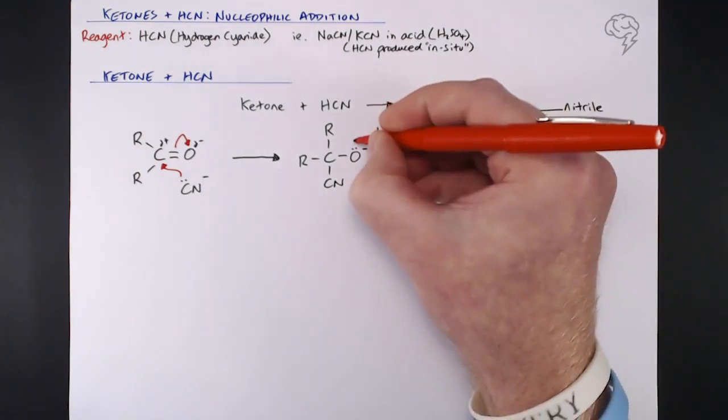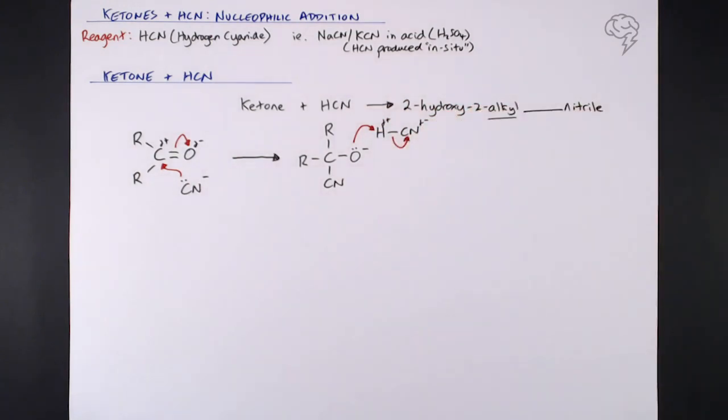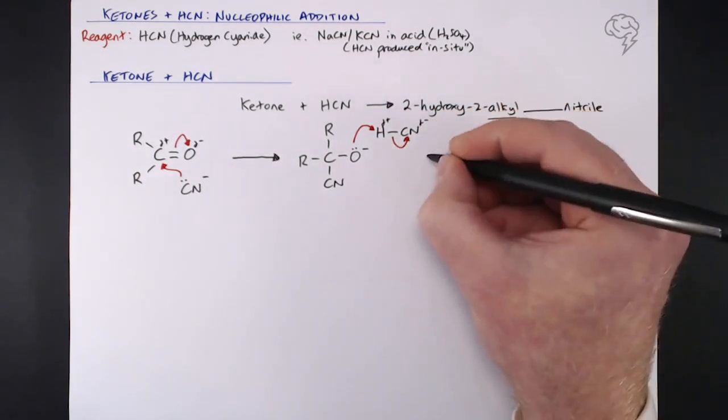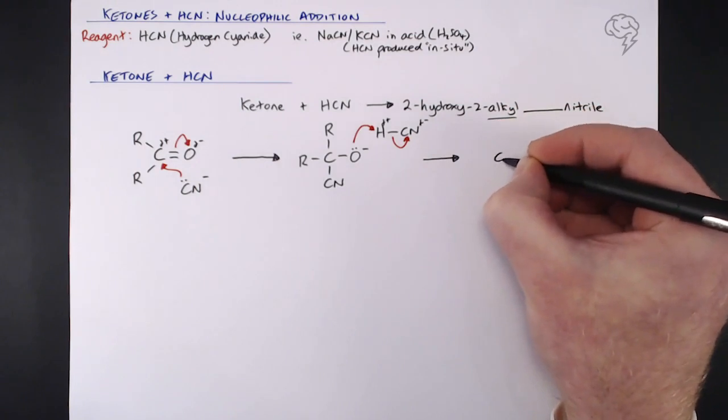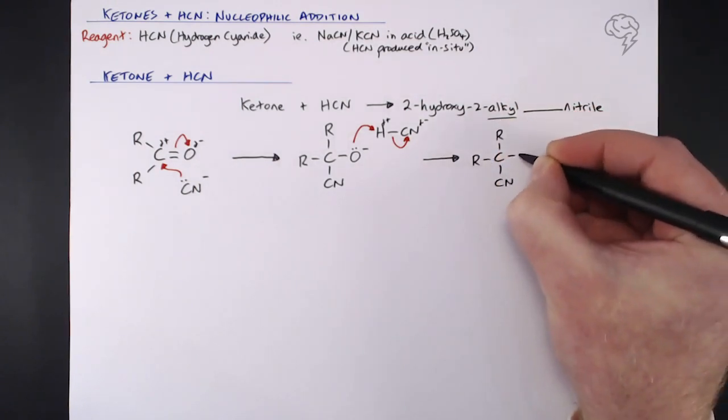That breaks the H to CN bond by heterolytic fission. What we end up with is our main organic product and CN minus, exactly the same as with aldehydes.